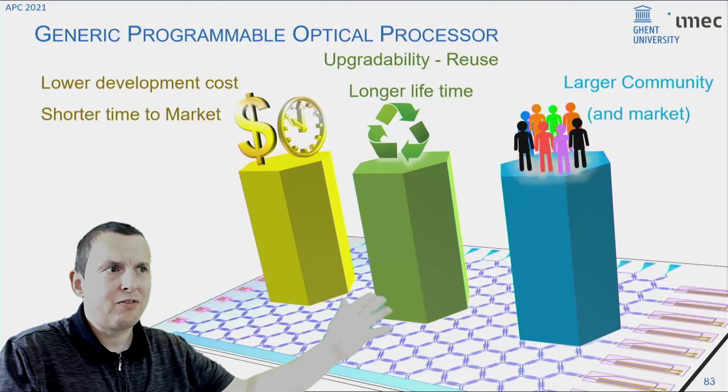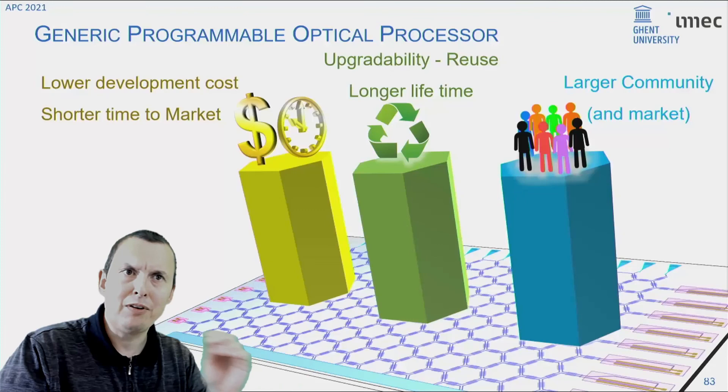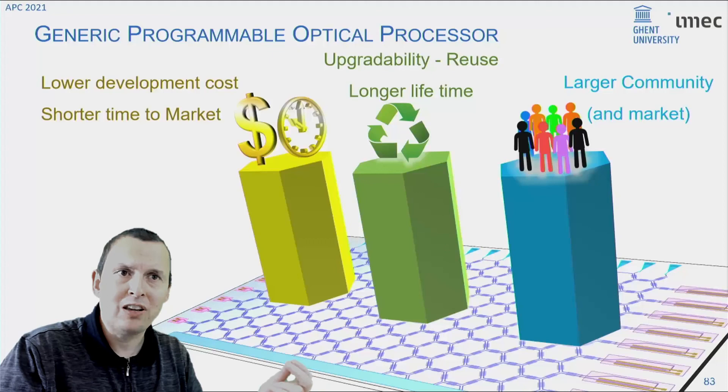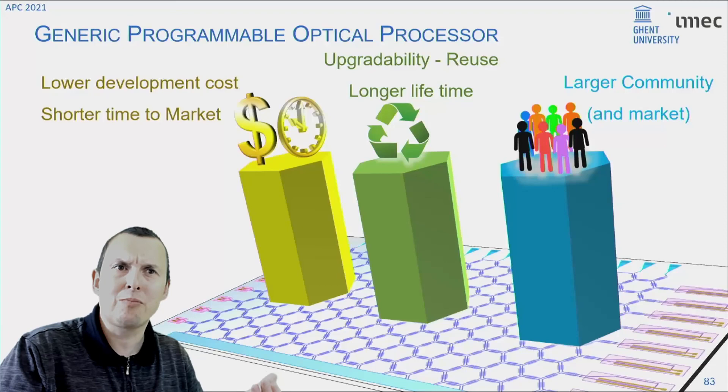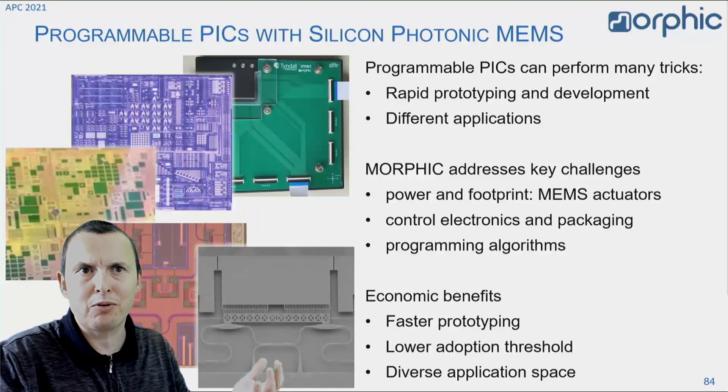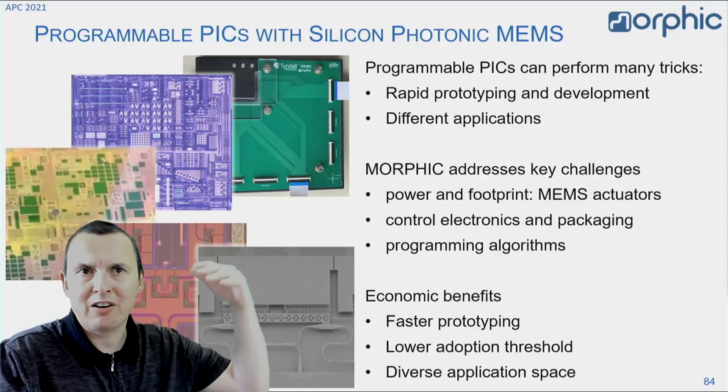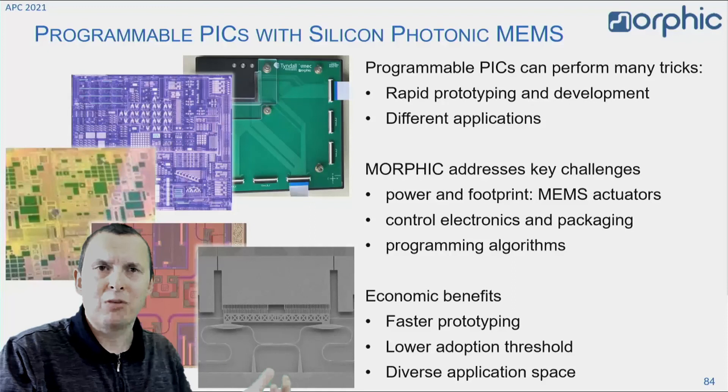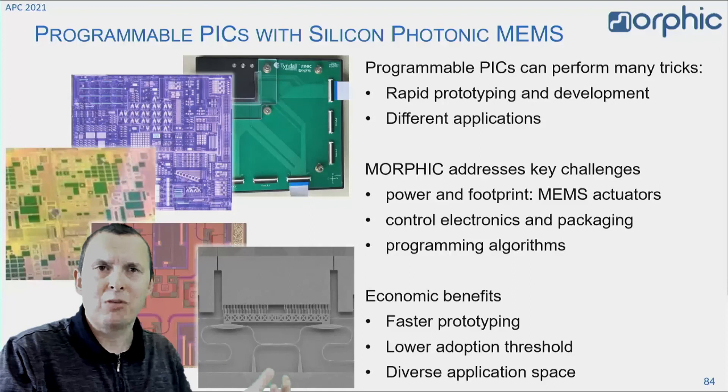And because these circuits can be programmable, that means that they can in principle be upgraded or can be fixed in software just like you are familiar now with most programmable electronics. But probably one of the biggest advantages of having a programmable photonic circuit is that suddenly you address a much larger community. Essentially, you give the circuits into the hands of electrical engineers and software engineers. And for every photonic engineer, you have 10 electrical engineers and 100 software developers. So suddenly your addressable market, your community for innovation is two orders of magnitude larger than if you would stick with application specific photonic circuits.